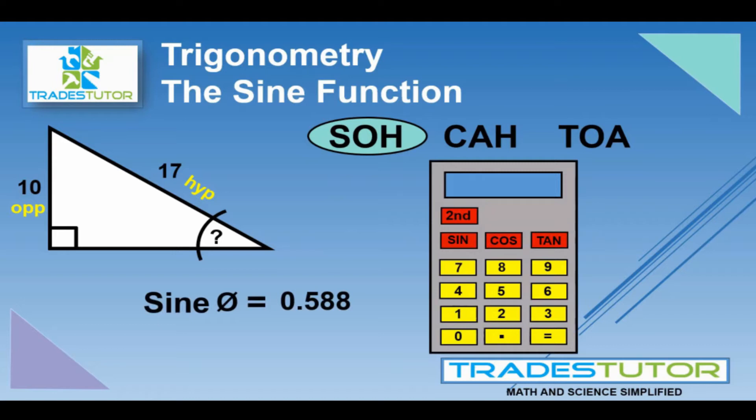How you do this is you just enter in 0.588. And now on the calculator, this is kind of a reverse engineering here. What we do is we hit second function, and then the SIN, or the sine button. What you'll end up with is the angle. So second function, sine, and then you'll find the angle. And that works out to be 36.